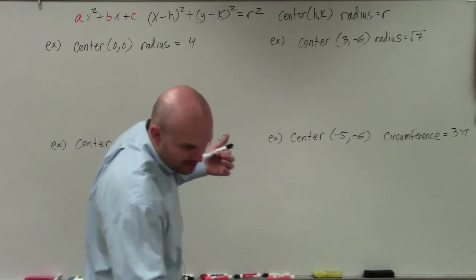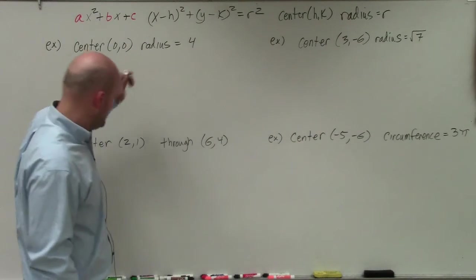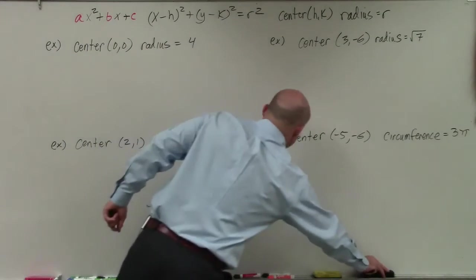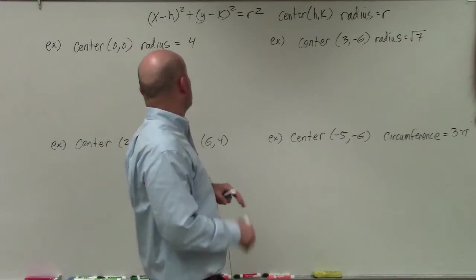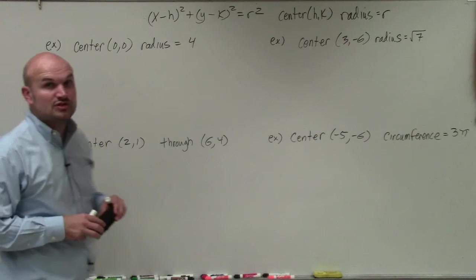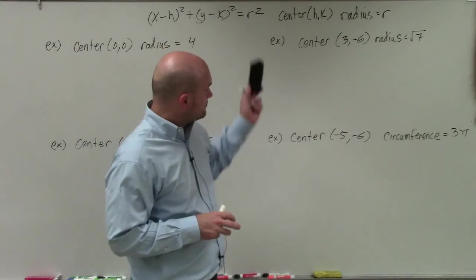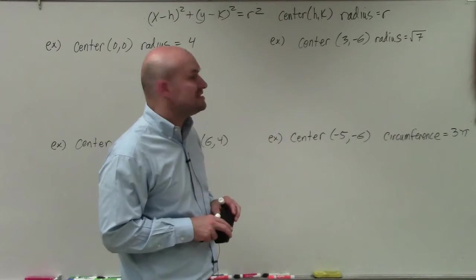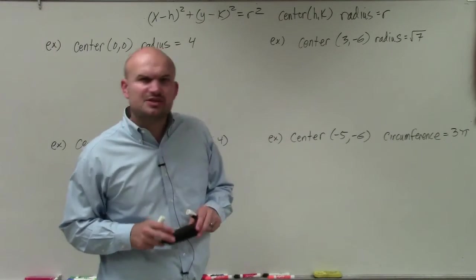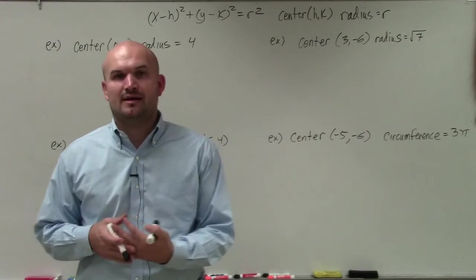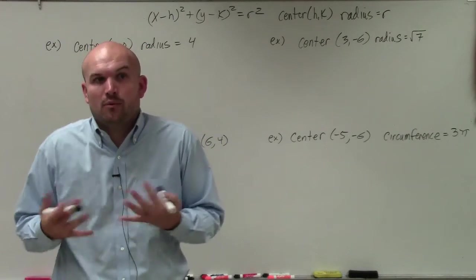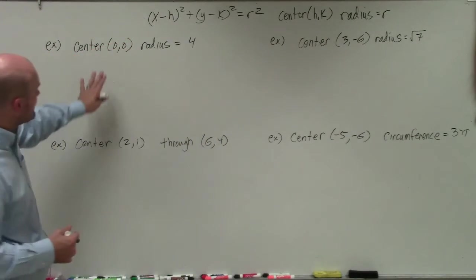So what I did is I wrote in some basic general information. We don't really need the standard form of a quadratic up here anymore. But I have the equation of the circle as x minus h squared plus y minus k squared equals r squared, as well as the center is h comma k, and the radius is r. So basically, when you're given a problem, the main important thing I want to do is label and identify what we are given.